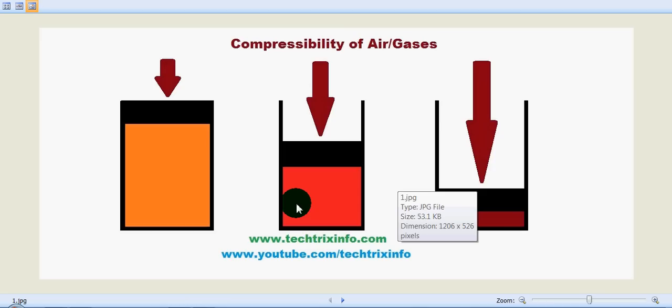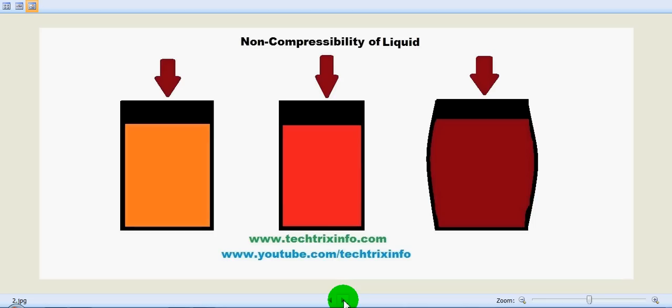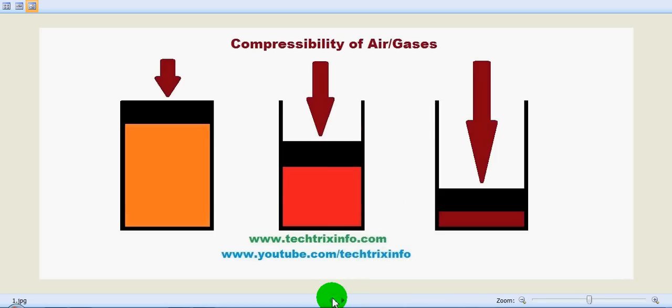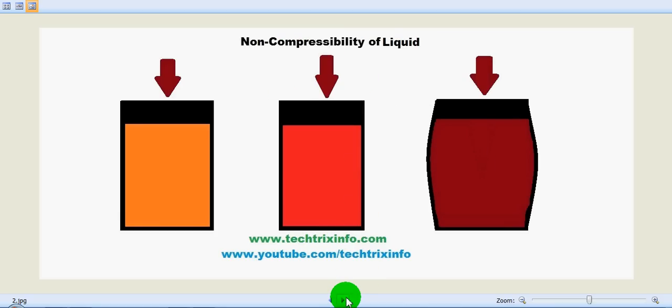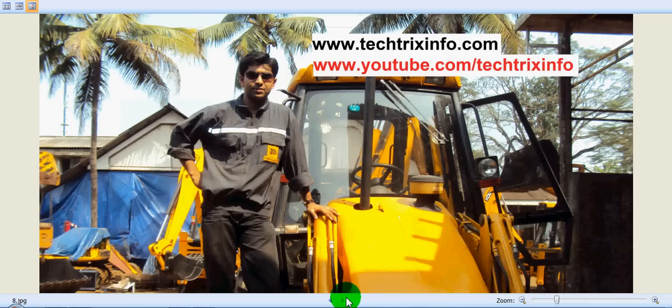So this is what you have to clearly understand: fluids are divided into air/gas and liquid. Liquids are non-compressible, and air and gas are compressible. I hope you got an idea. For other technical videos, you can visit my blog or YouTube channel. Thanks for listening.